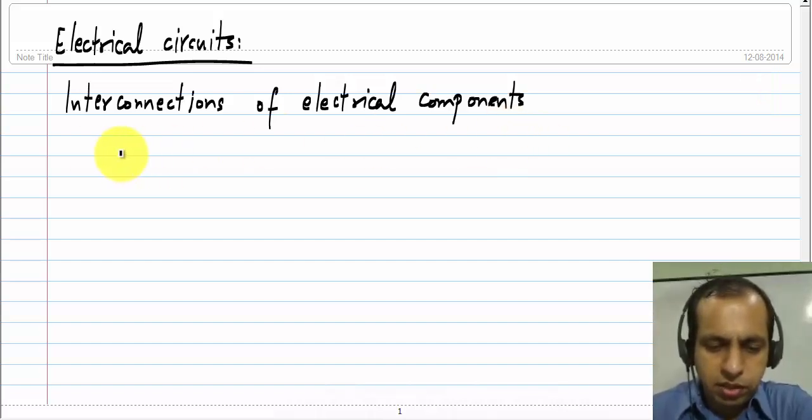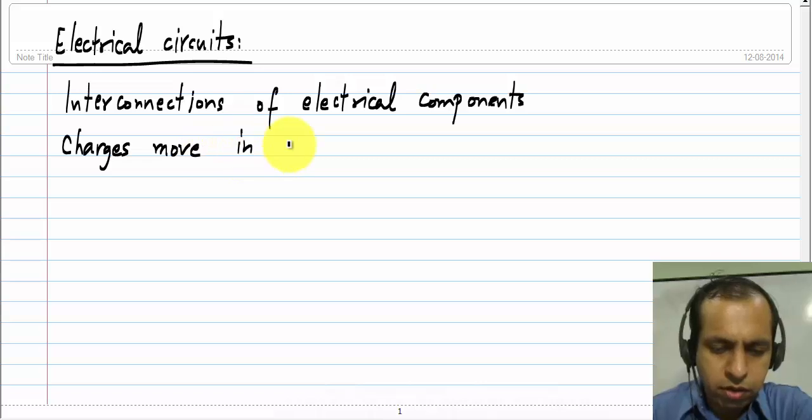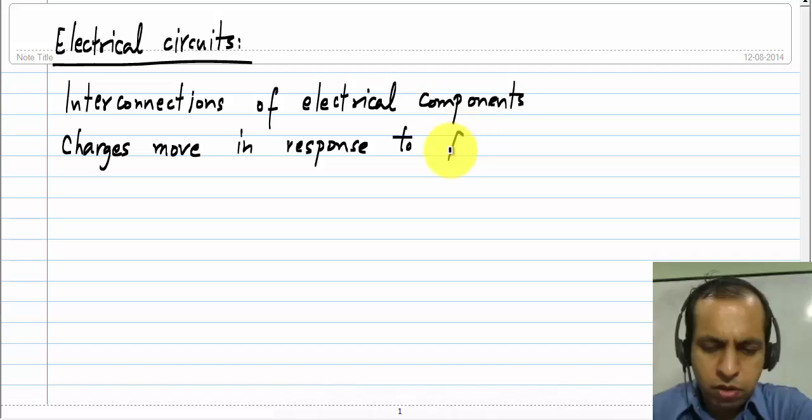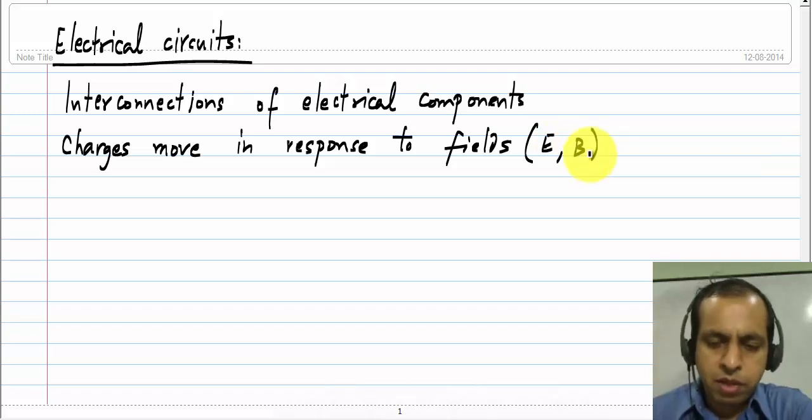So what happens in an electrical circuit is that charges move in response to fields, which could be either an electric field or a magnetic field, but like I said,